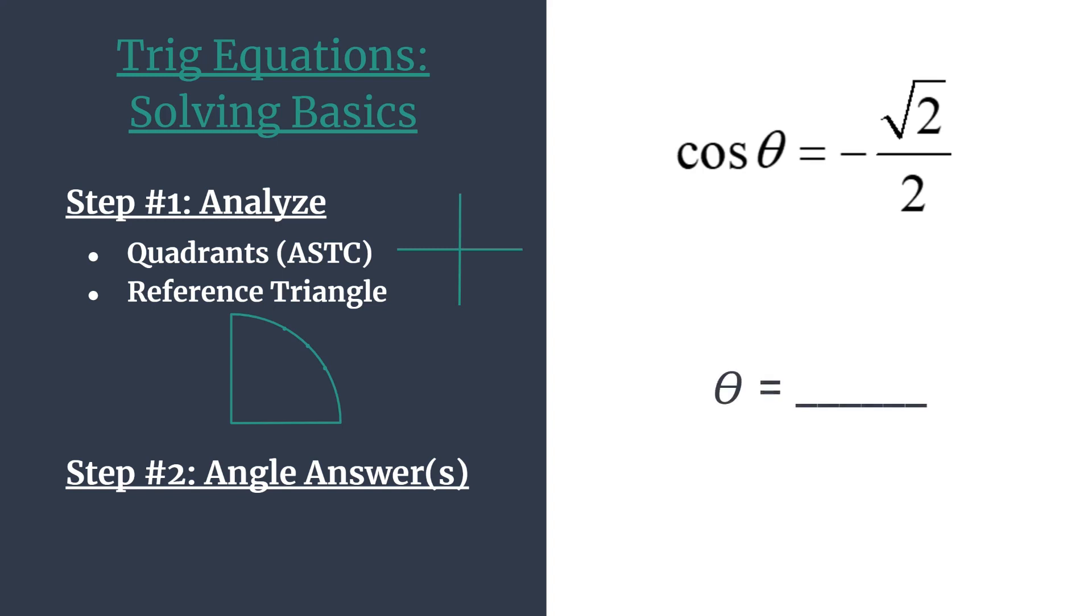Cosine theta equals negative square root 2 over 2. We start by analyzing, and we're going to figure out which quadrants we should be working in. In this acronym, ASTC, think all students take classes. It's going to tell us which trig functions are positive in each quadrant. So let's go ahead and label the quadrants. We work our way around, starting in quadrant one, A, S, T, C.